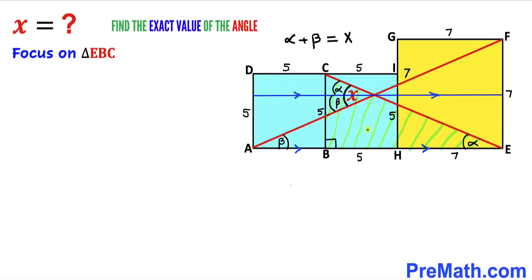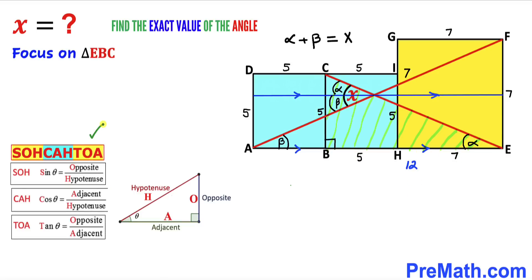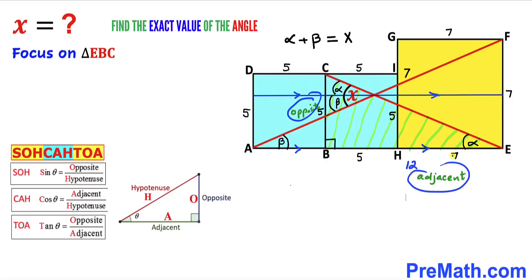Let's focus on right triangle EBC. Its side lengths are 5 cm on one side, and 5 + 7 = 12 cm on the other. Using SOH-CAH-TOA, tangent of alpha equals opposite over adjacent, so tangent of angle alpha equals 5 divided by 12.